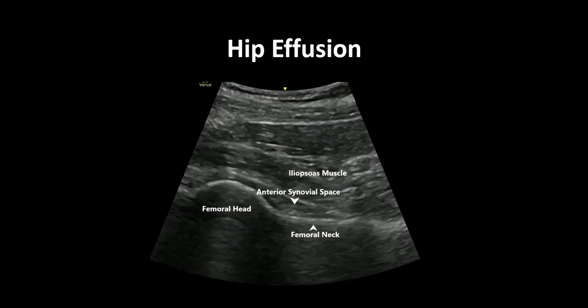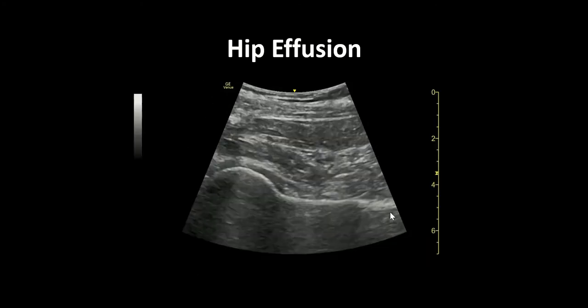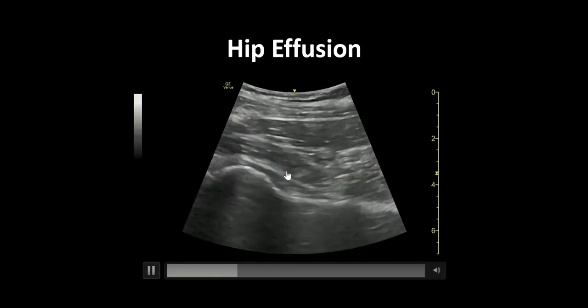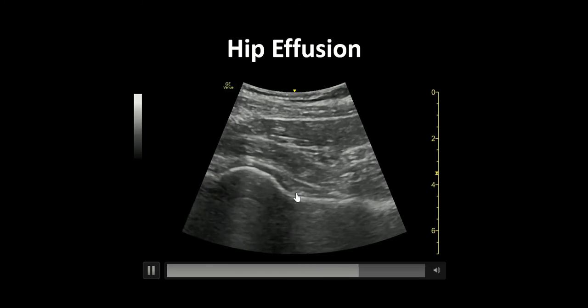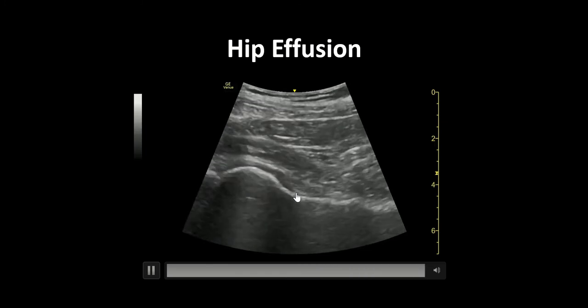Compare this image to a normal hip where there is minimal to no fluid in the anterior synovial recess. Again, we see the femoral head and neck, but an absence of fluid above the femoral neck.